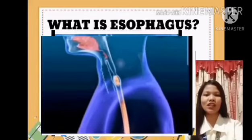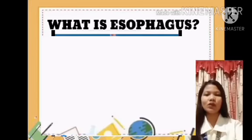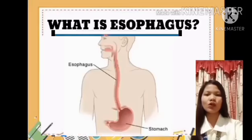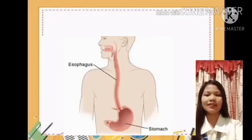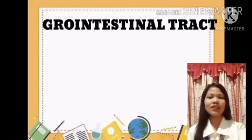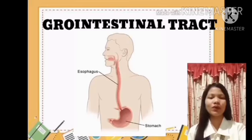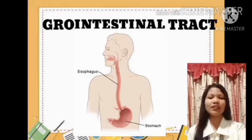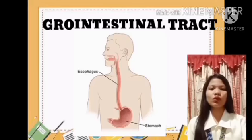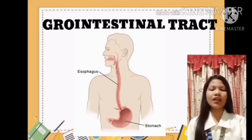Ito naman yung parang tubo sa lalamuna natin. Mula sa leeg patungo sa sikmura natin. Doon dumadaan ang mga kinakain natin. From the word gastrointestinal — it is the tract from the mouth to the anus, which includes all the organs of the digestive system in humans and other animals. Food taken through the mouth is digested to extract nutrients and absorb energy. Ang gastrointestinal naman, ito yung tumutunaw sa mga kinakain natin. At dito napupunta ang sustansya ng kinakain natin. At iyon ang nagbibigay sa atin ng enerhiya.